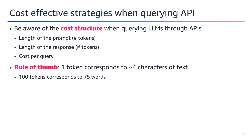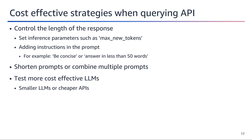Cost-effective strategies when querying large language models through APIs involve being aware of the cost structure, which typically depends on the length of the prompt, the length of the response, and the cost per query. As a rule of thumb, one token corresponds to approximately four characters of text, and 100 tokens is roughly equivalent to 75 words. Understanding these factors allows you to optimize prompts and manage costs effectively. Controlling the length of the response by setting inference parameters such as max new tokens to limit output size is one key strategy.